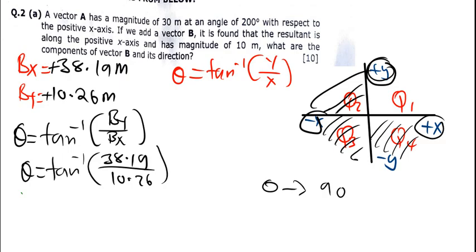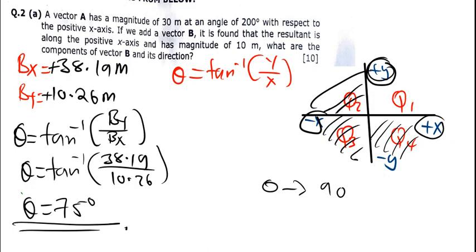tan⁻¹(38.19 / 10.26) gives approximately 74.96 degrees, which is the same as 75 degrees. So that's the direction of vector B.